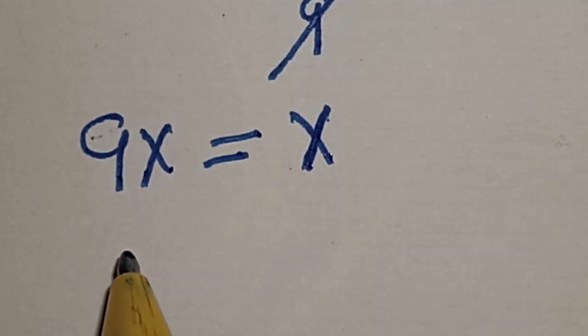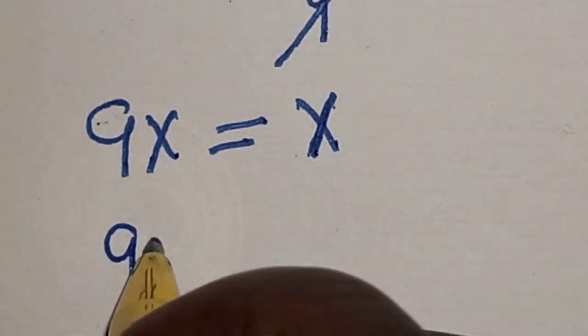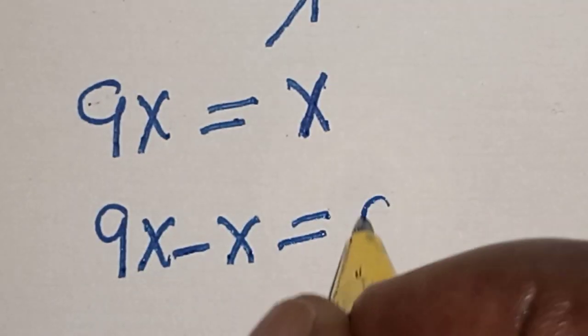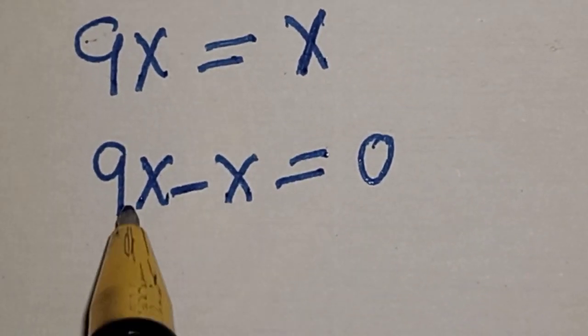9x minus x is equal to 0. 9x minus x is 8x is equal to 0.